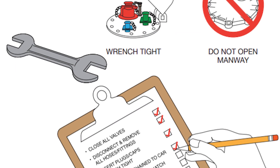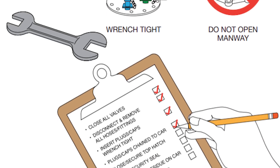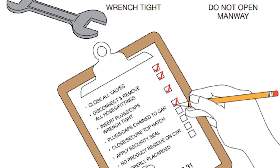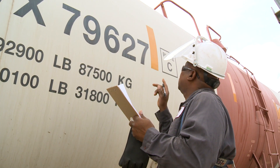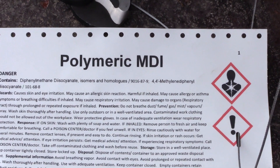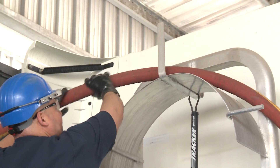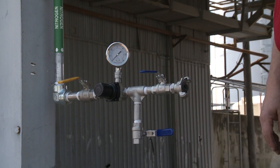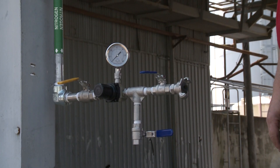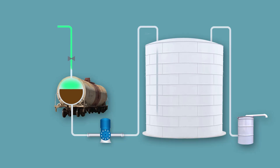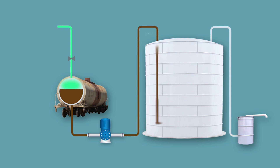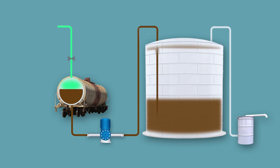Todas las verificaciones en este proceso pueden parecer innecesarias porque la operación es de rutina, pero tomar estas precauciones cada vez reduce el riesgo de contaminación del producto y un potencial desbordamiento. Los carrotanques en general se descargan con nitrógeno o presión de aire seco. Un método alternativo sería realizar la descarga utilizando una bomba mientras se agrega nitrógeno o aire seco para mantener una atmósfera seca dentro del carrotanque.